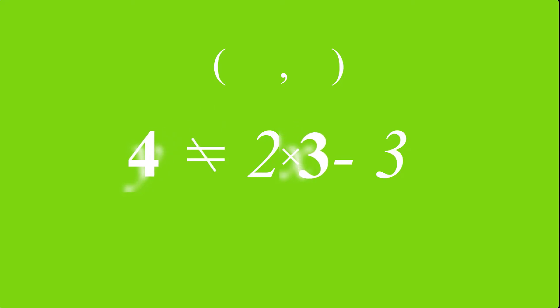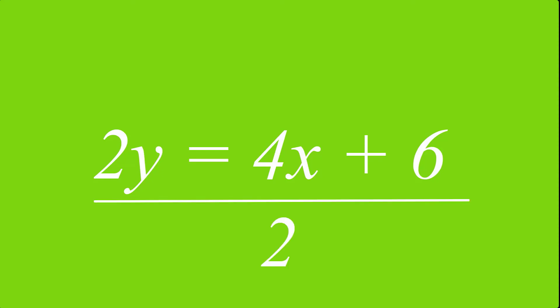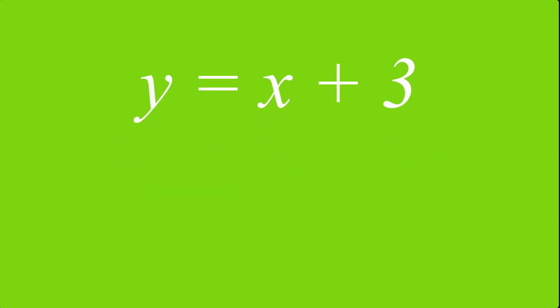Now here's one thing to remember: to get the gradient and the y-intercept, it has to be in the general form. So if I got, for example, 2y equals 4x plus 6, then first I'd have to set it to the general form before I could know what the gradient or the y-intercept is.